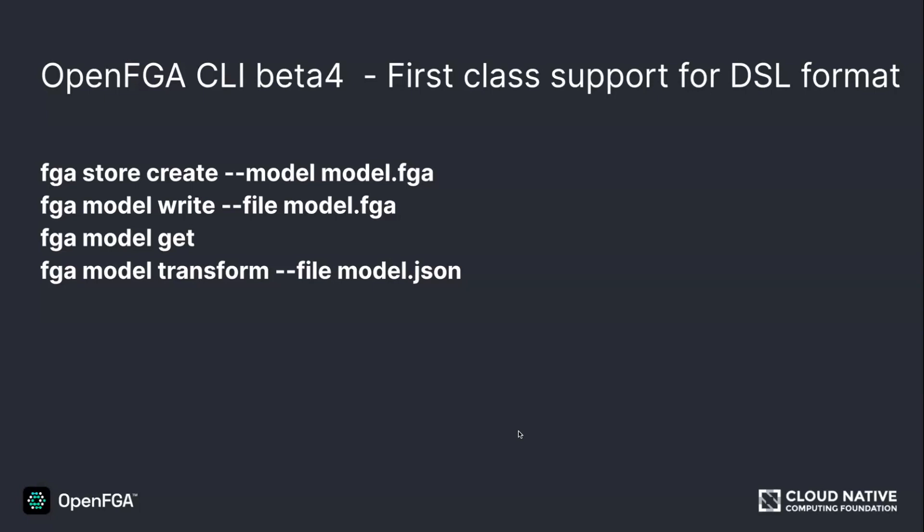We shipped a new version of the CLI. This version allows you to create a store directly from an FGA model file, write the model directly from an FGA model instead of using JSON format, and if you do 'fga model get' with the store configured in an environment variable you get the latest model from the store. You can also transform from and to JSON format using the model transform command. This might simplify your CI/CD processes where you were previously transforming FGA models to JSON before writing them.